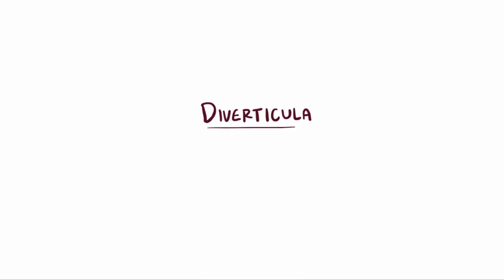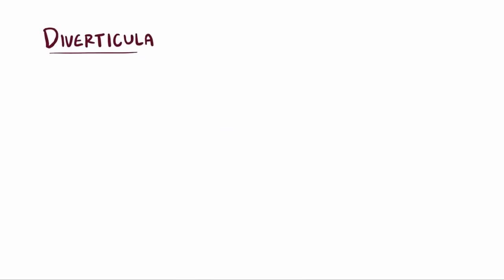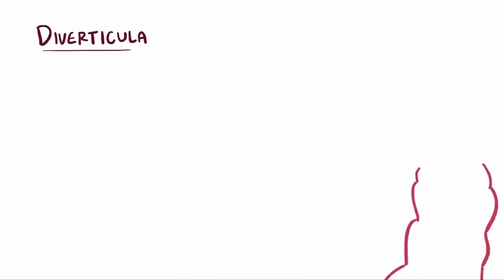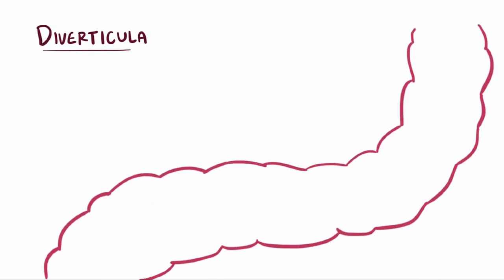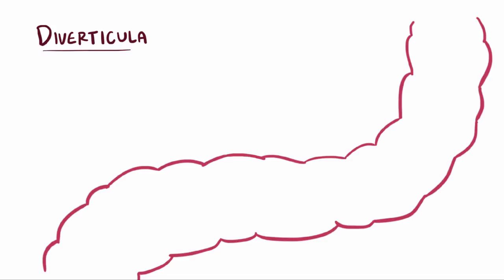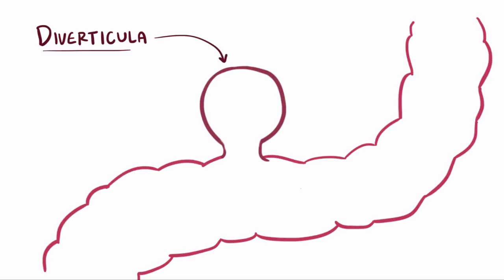Diverticula, or a single diverticulum, is a pouch that forms along the walls of a hollow structure in the body, kind of like a cave. Usually we talk about these caves or pouches in the context of the large intestine, so it would be a colonic diverticula, but it can also happen in the small intestine as well as other hollow structures in the body.